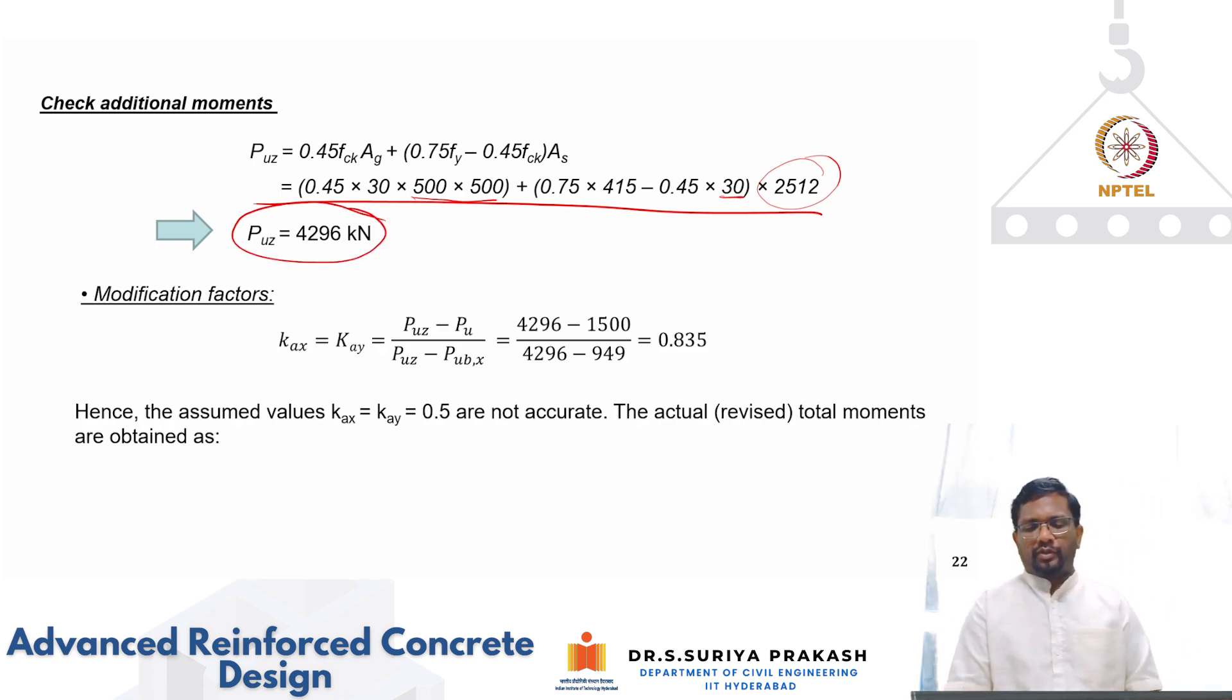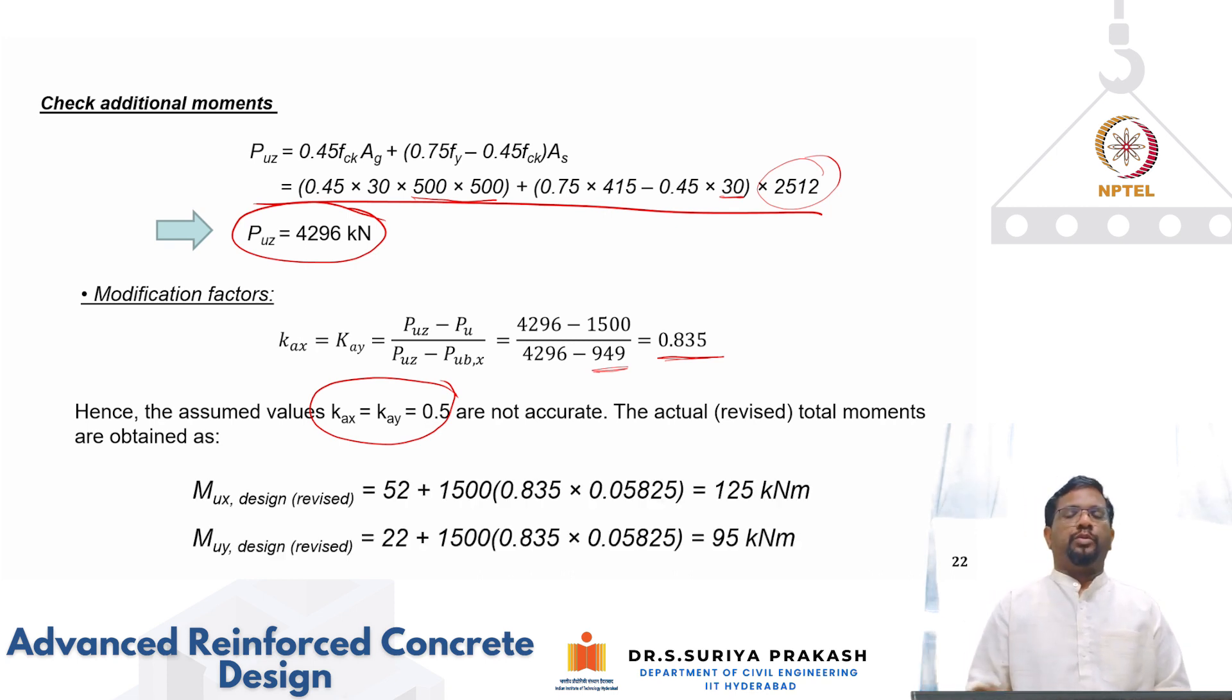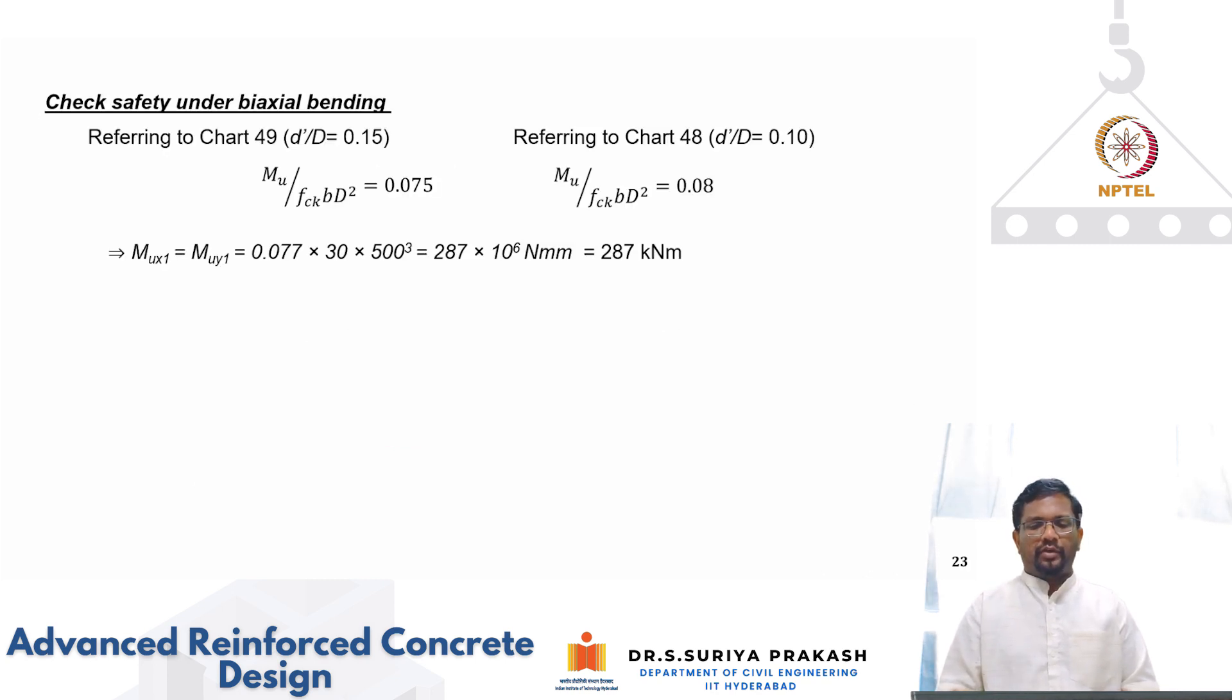And your modification factors works out to be 0.835. So the assumed value of reduction factor of 0.5 is not correct, which is basically it tells that it is higher. So you can in fact use 0.835 but you have used only 0.5, but still your design will be conservative. If you want to optimize the design, you have to go ahead and redo that. The revised design moments now will be, instead of 0.5 that what we have considered, now you have to use 0.835. Then it will become 125 and 95. So this is higher value, so that is the reason your demands are slightly getting higher. Then you get your biaxial bending capacities as 287 which is significantly higher than 125 and 95.